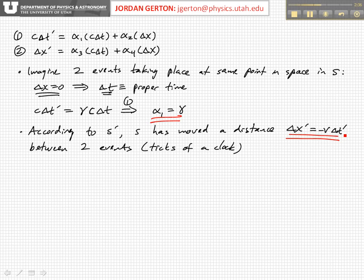So in S, there's a clock ticking. Each tick is an event which happens at a particular point in space in the S frame. According to S prime, the time interval between the ticks is time dilated, and that allows us to solve for alpha one. And in addition, the clock seems to be moving with respect to S prime. And how far does it move?